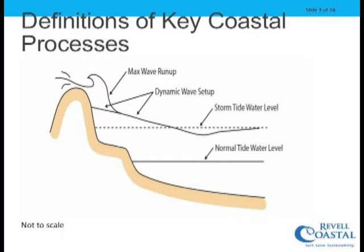I want to do a quick definition of coastal processes. We have a normal tide level — also called stillwater level — a storm tide water level associated with El Niño or king tides. There are also dynamics associated with waves coming into the coast: wave setup and dynamic wave setup. On top of that, we have wave run-up — that's what you experience when standing on the beach and your toes get wet, or riding the wave to the bitter end on the sand.